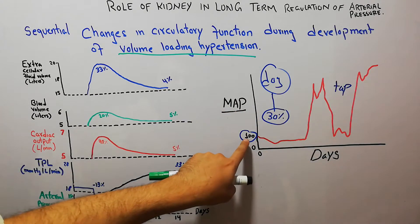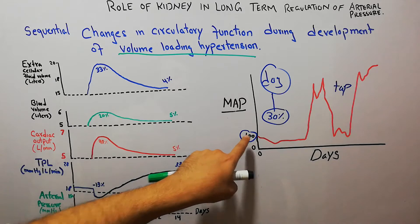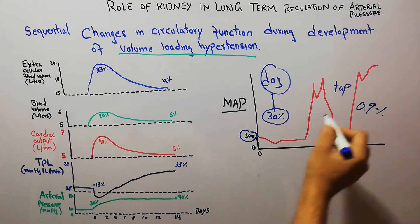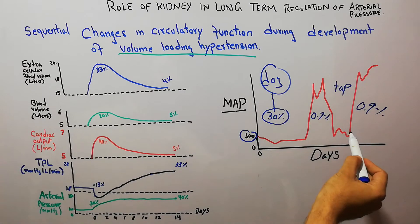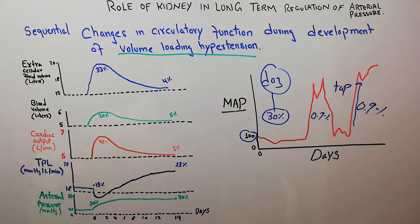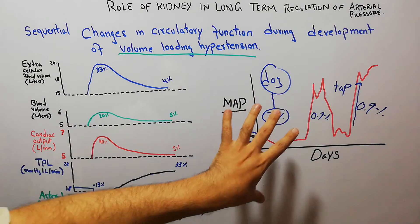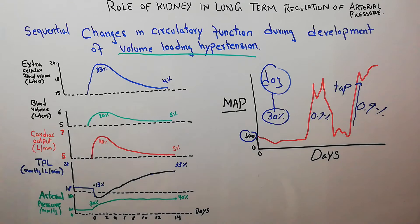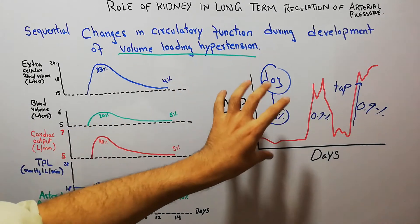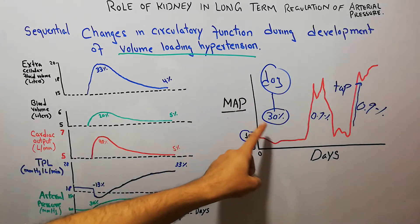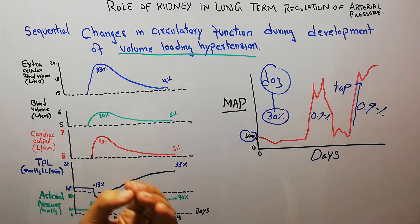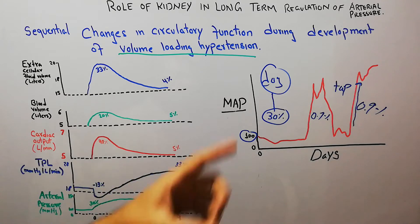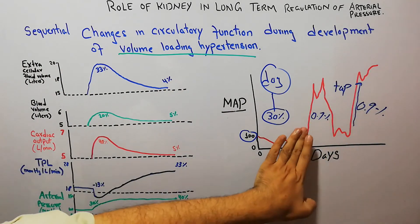The mean arterial pressure decreased but still remained slightly above the normal level of about 100 mmHg. Then when the dog was again given 0.9% saline, the arterial pressure shot up again due to loading of extra fluid. That was an experiment, but the same data can be extrapolated to human bodies as well. The body of the dog was loaded with extra volume because the kidney size was reduced, so the fluid could not be removed from the body.